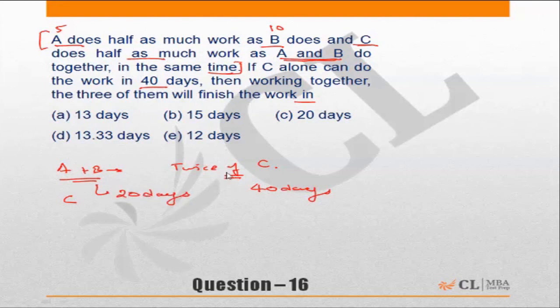I hope this is clear. C does half as much work as A and B, that means he'll take twice the time of A and B. And if C can finish the work in 40 days, that means A and B can finish the same work in 20 days.